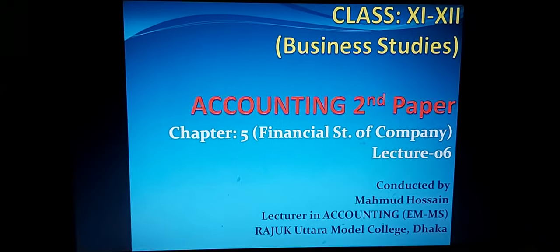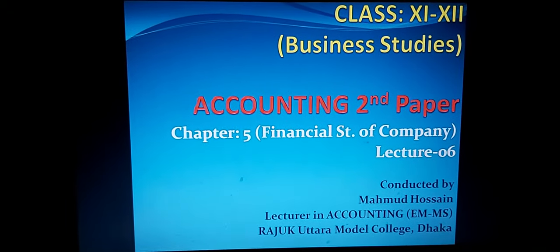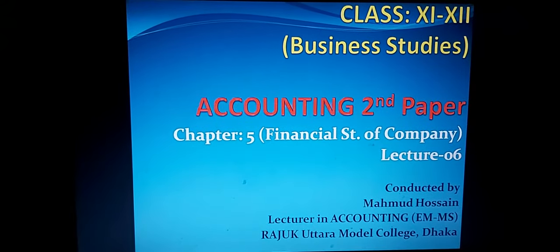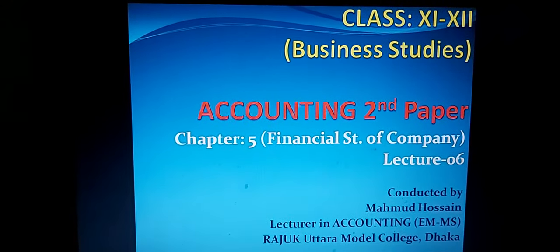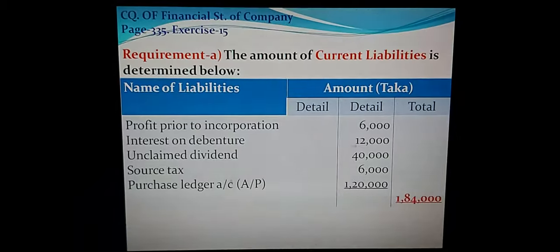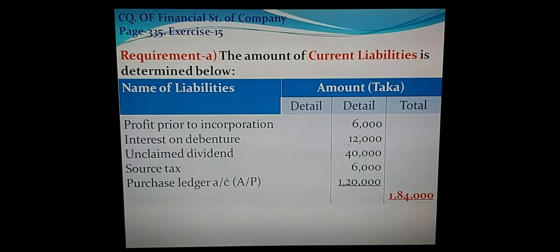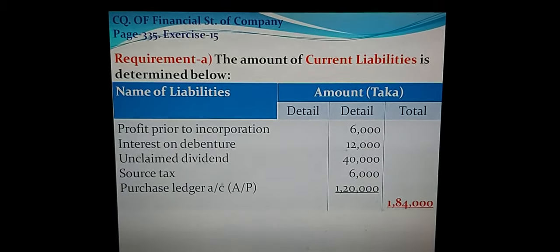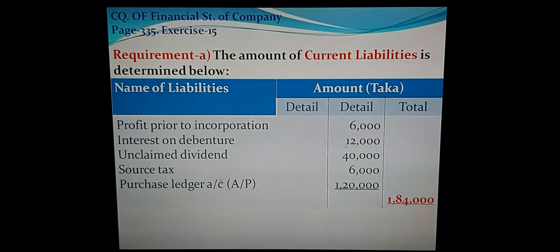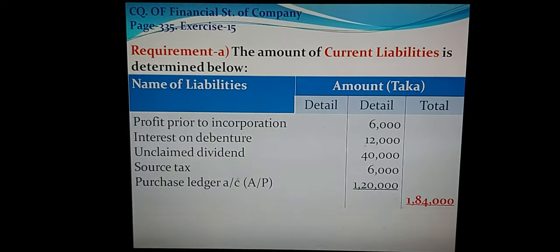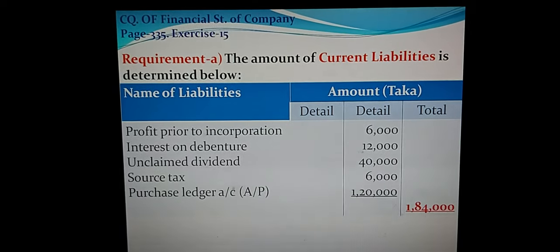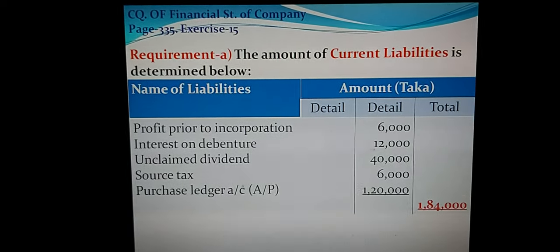Now take your accounting copy to solve exercise 15. I think you are ready. For requirement A, the amount of current liabilities or short-term liabilities is determined below. Totally five items of current liabilities or short-term liabilities are available in this trial balance and adjustments.